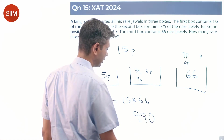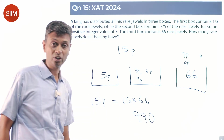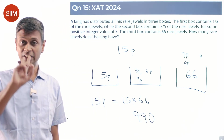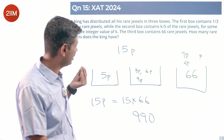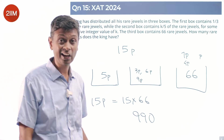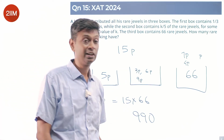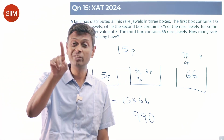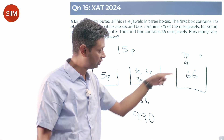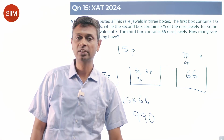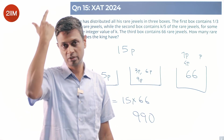The king has 15p originally, so 15 times 66 equals 990. The king had 990 jewels to start with. One-third goes to box one, three-fifths goes to box two, and the remaining one-fifteenth goes to box three — which happened to be 66. Beautiful question.